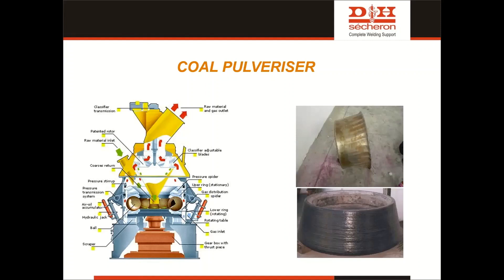The whole raw material gets inside and whatever crushed particles are produced are taken from the top. Heavier particles are supposed to come back inside. Light particles will try to push outside, but the design is made such that heavier particles are not lifted — they are crushed until they reach the required fineness.